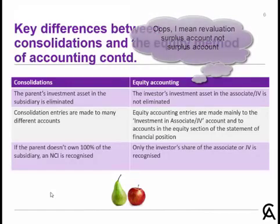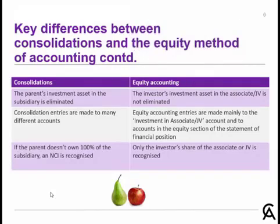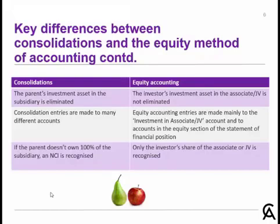In consolidations, if the parent doesn't 100% own the subsidiary, then we have to recognise that there's a non-controlling interest. So in an 80% owned subsidiary, we'd have a 20% non-controlling interest. Whereas with equity accounting, we only ever journalise our share of the associate or joint venture. So if we have a 40% interest, our entries are being made for that 40% share. Those are the key differences between consolidations and the equity method of accounting.